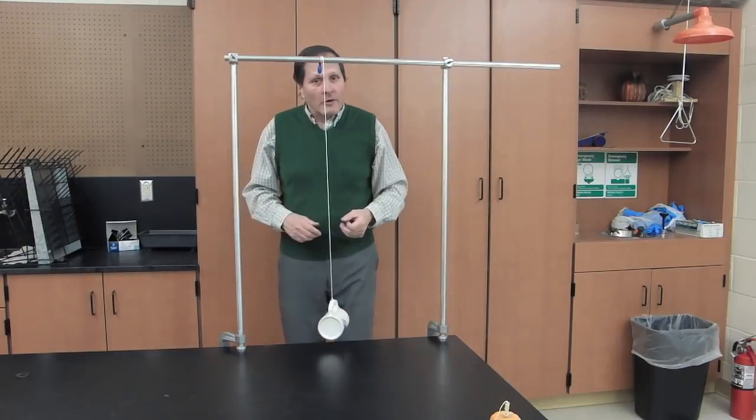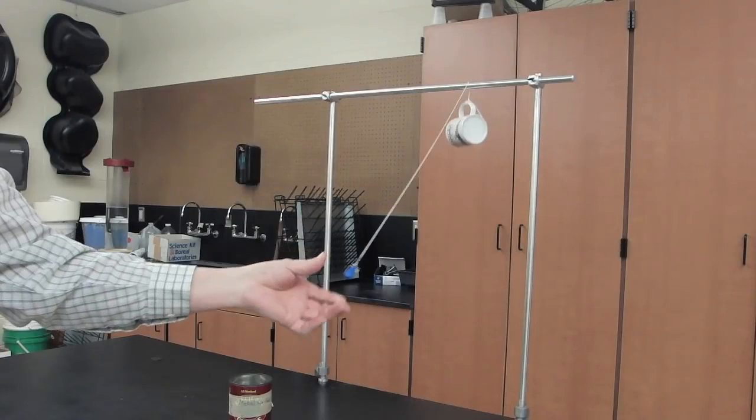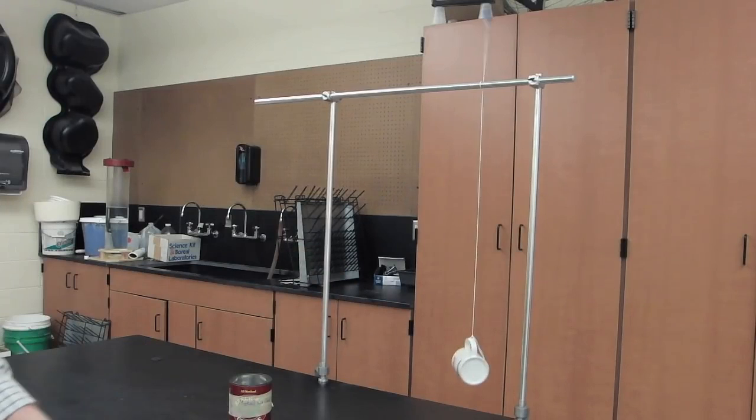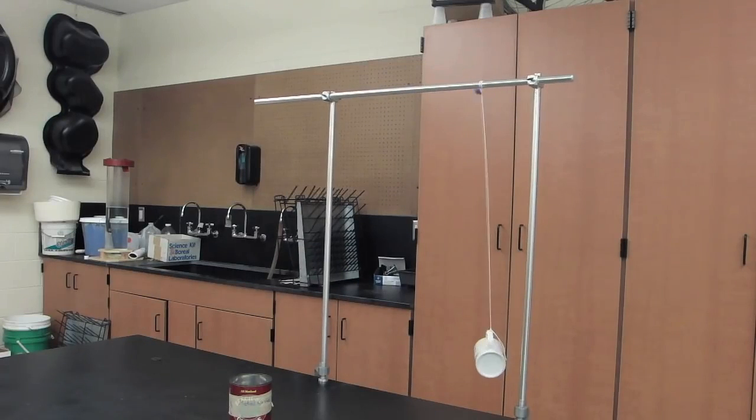Well, what's going on here? Let's take a closer look. It appears that the small weight is going up and wrapping around the pole and stopping the cup just short of hitting the table.